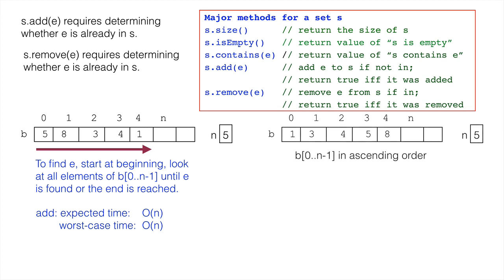If the elements are from an ordered set, we could keep b[0..n-1] in ascending order, and then use binary search to see whether a value is in the set. This reduces the lookup time to O(log n).